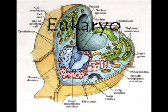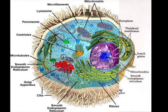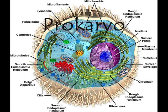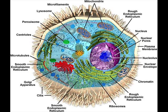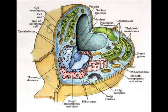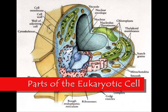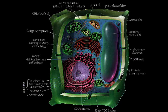Organisms whose cells normally contain a nucleus are called eukaryotes. Those organisms whose cells lack a nucleus and have no membrane-bound organelles are known as prokaryotes. Eukaryotic cells generally have three main components: a cell membrane, a nucleus, and a variety of other organelles.